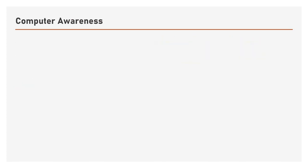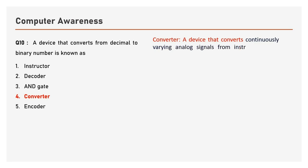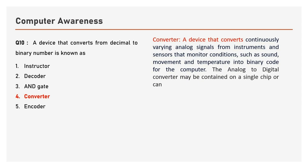Question number 10: A device that converts from decimal to binary number is known as — options are Instructor, Decoder, Gate, Converter, Encoder. The answer is Converter. A converter is a device that converts continuously varying analog signals from instruments and sensors that monitor conditions such as sound, movement, and temperature into binary code for the computer. The analog to digital converter may be contained on a single chip or can be one circuit within a chip.